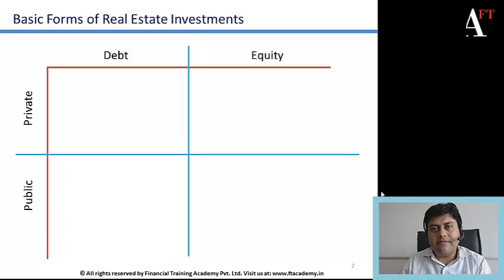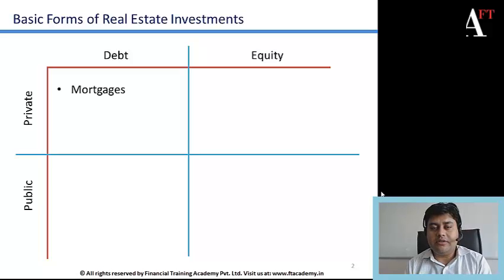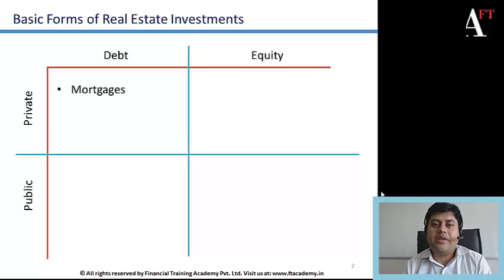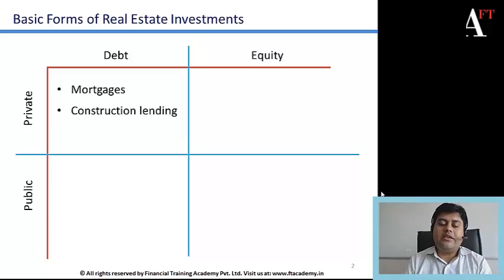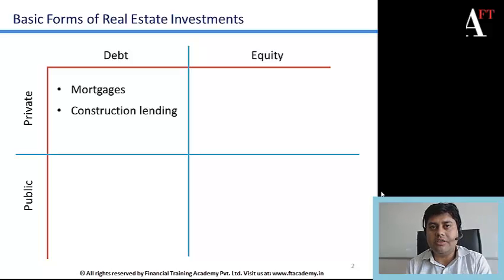The first quadrant is where the investment is in the form of debt and of a private nature. This covers situations where a bank has provided lending to an individual for a residential property — called a traditional mortgage — where the house serves as collateral. The other category is construction lending, where banks or institutions lend to companies in the business of real estate construction.